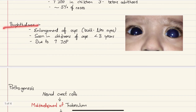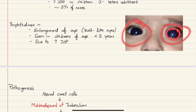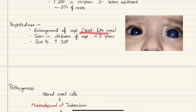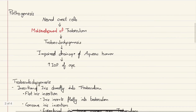Buphthalmos is enlargement of the eye seen in children under three years old due to increasing intraocular pressure. In the picture, the large cornea demonstrates the enlarged eye in the child. Buphthalmos is when increasing intraocular pressure in children under three causes the eye to enlarge and appear bull-like — hence the name buphthalmos.